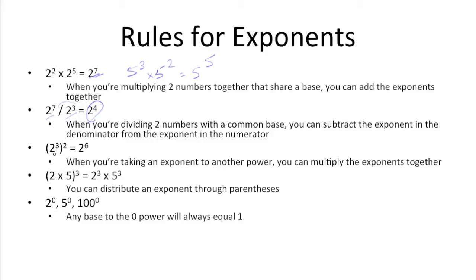When you have an exponent to the third or 2 cubed here, taken to another power, to the second power on the outside here, you can multiply the exponents together, which is why you get 2 to the sixth here.